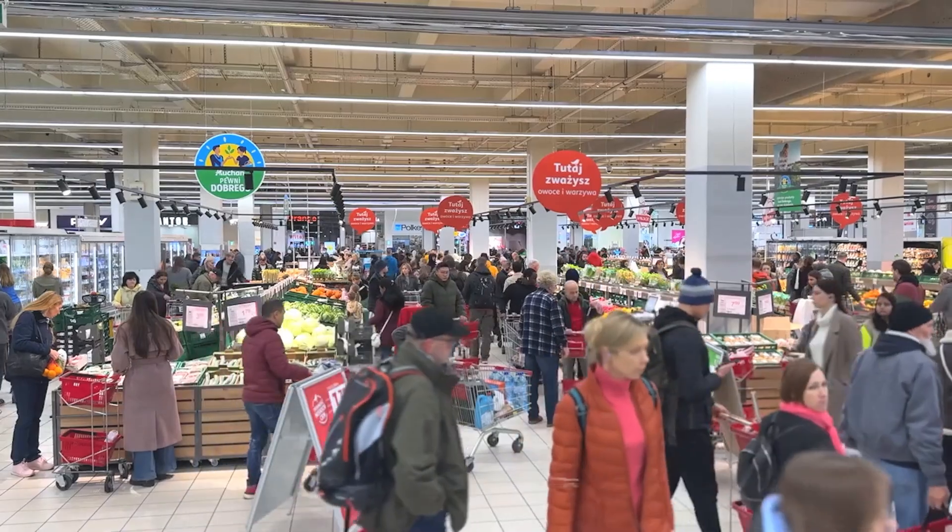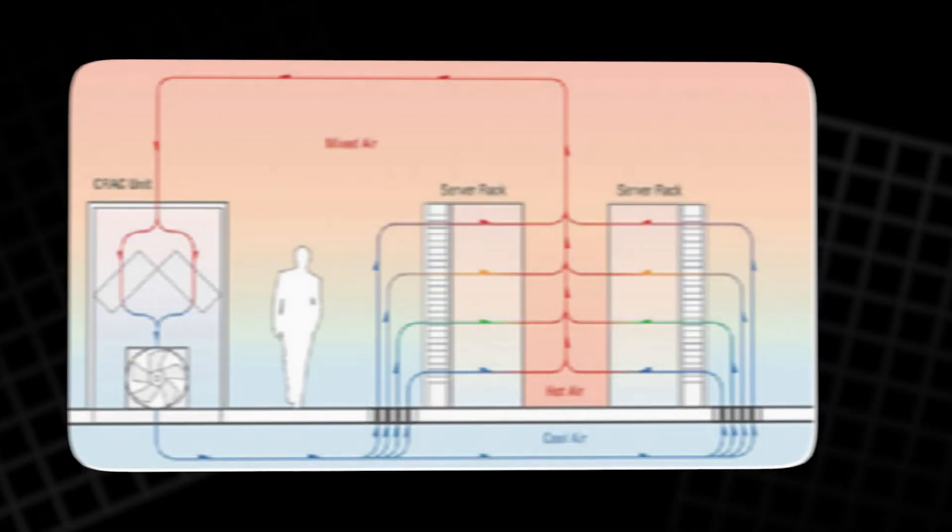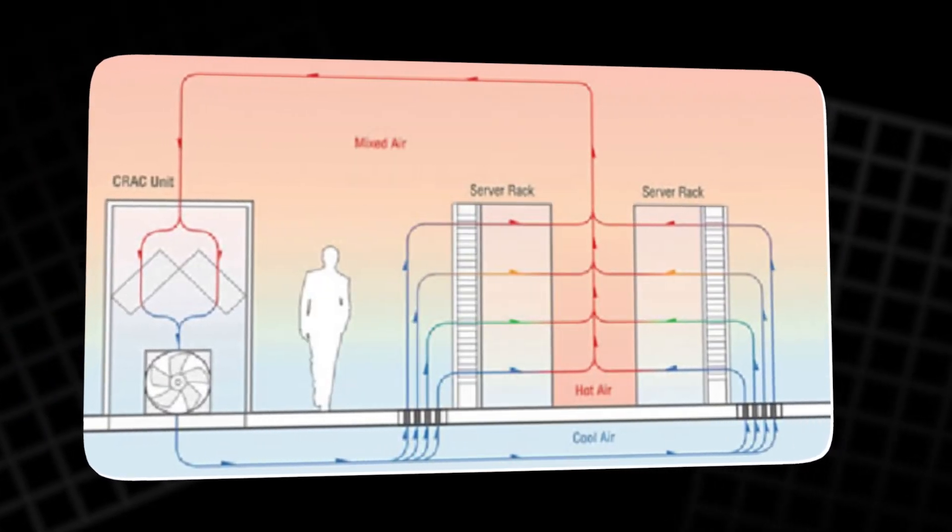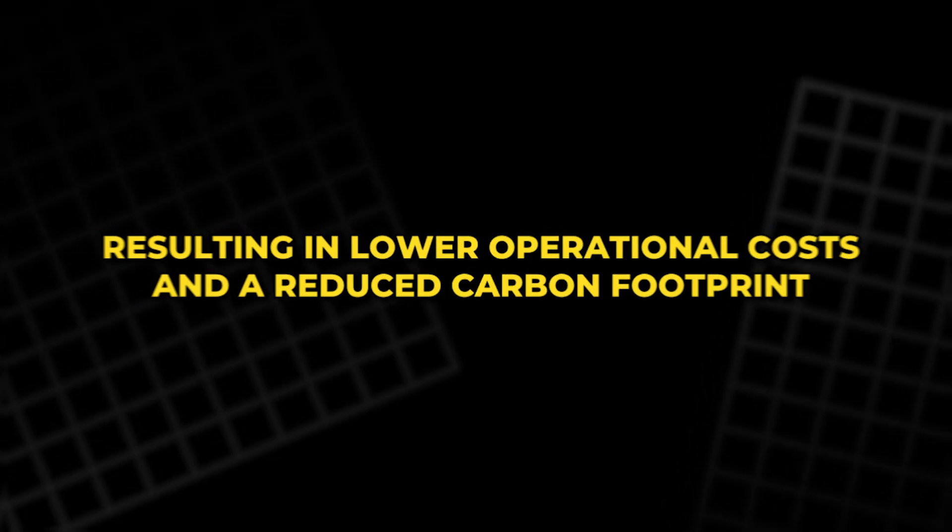For instance, supermarkets could benefit from magnetocaloric refrigeration units that use significantly less energy than traditional cooling systems, resulting in lower operational costs and a reduced carbon footprint. Similarly,